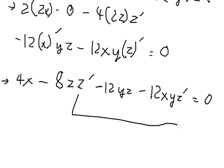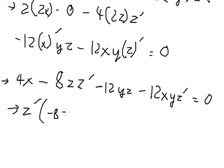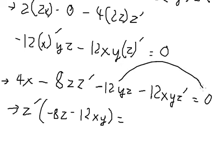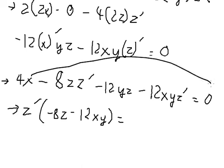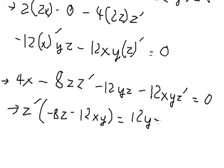Now these terms we can factorize. I will move this to the right and this to the right, so we have 12yz minus 4x. Then we need to divide both sides by this factored term to solve for ∂z/∂x.